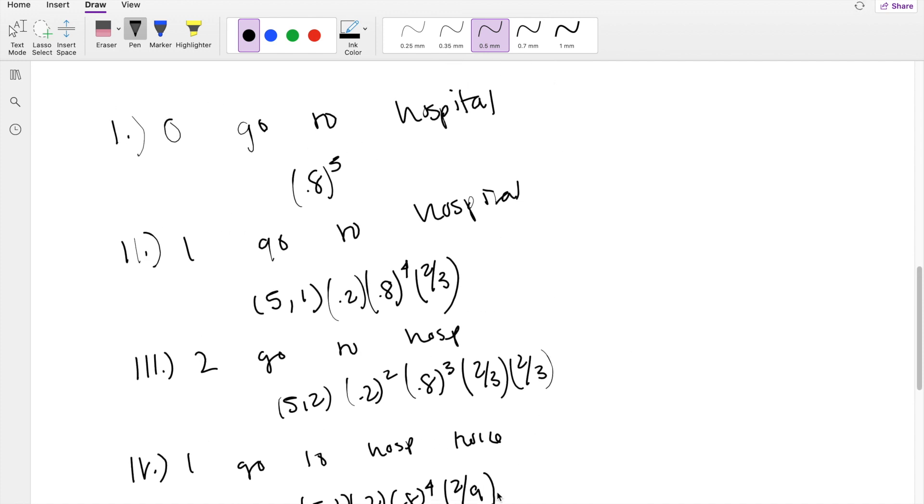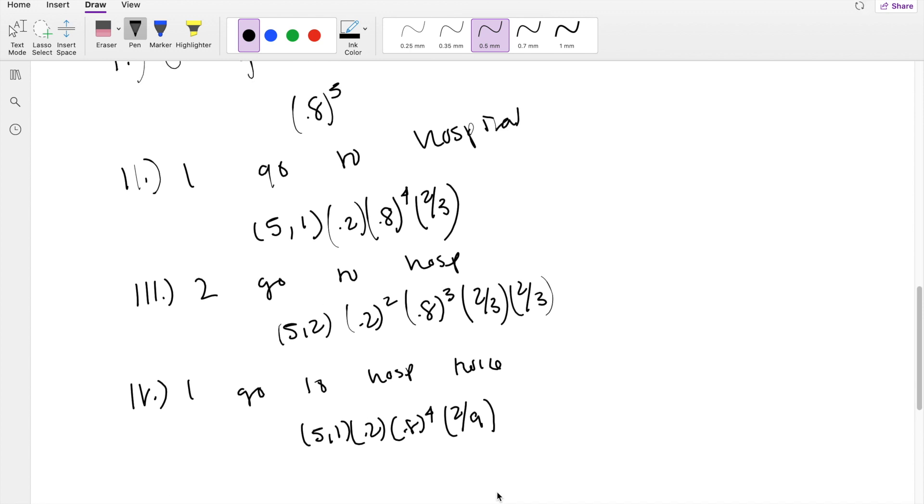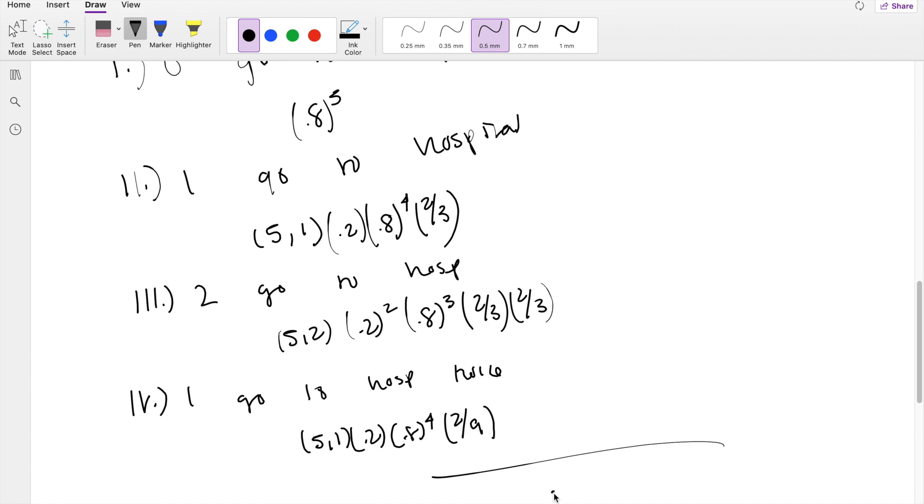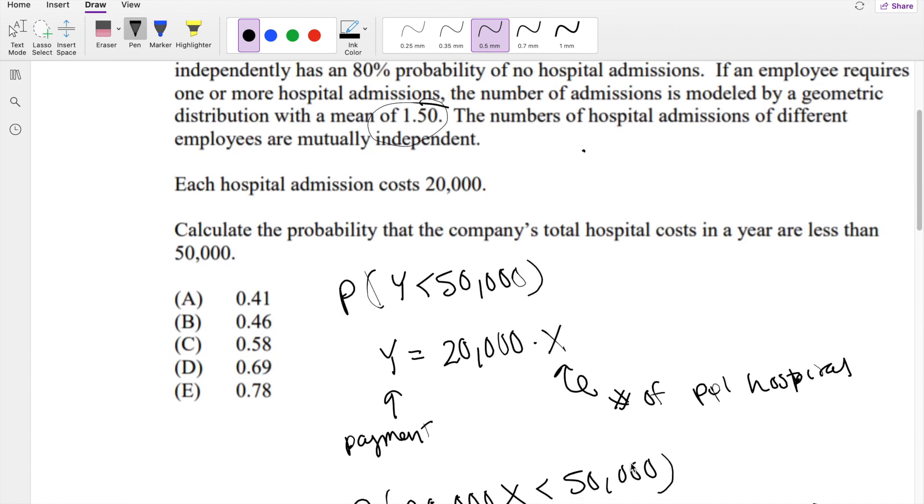So now all I have to do is add those probabilities together. Add it all up, equals 0.78279, which is our answer E.